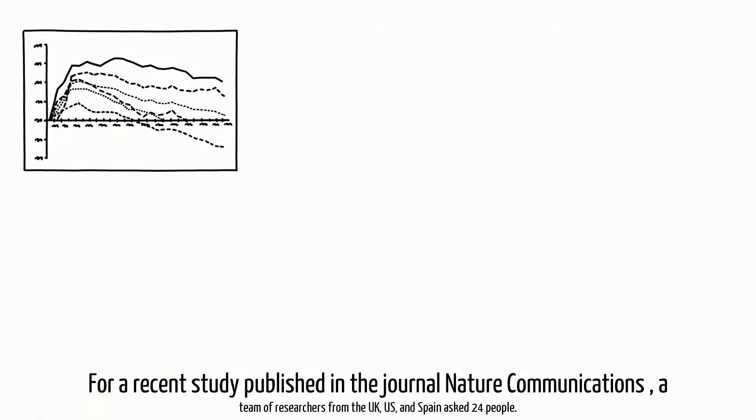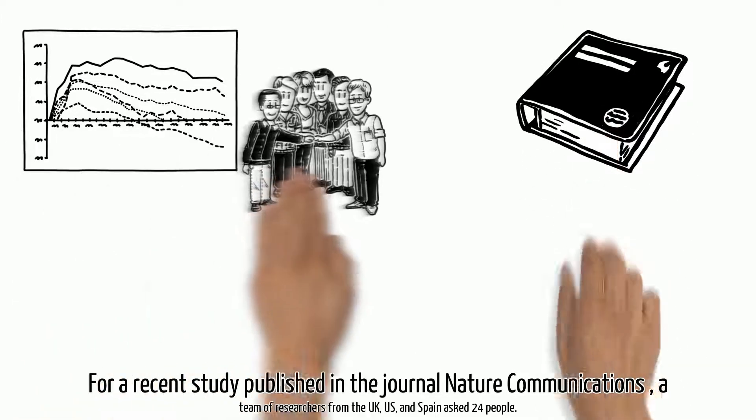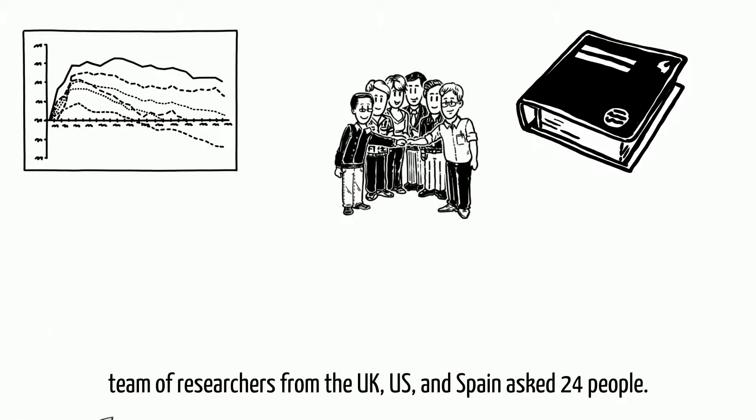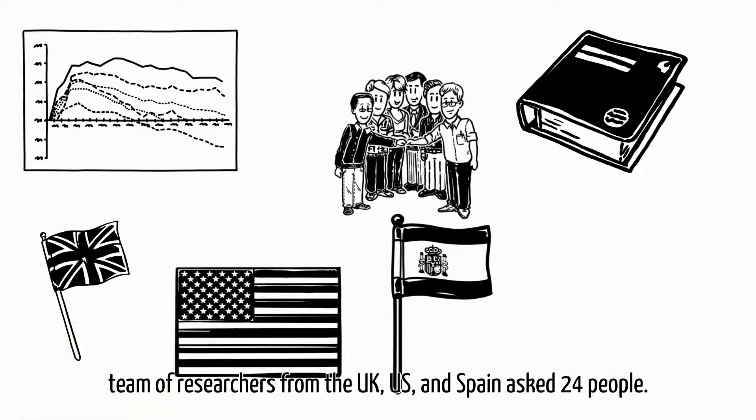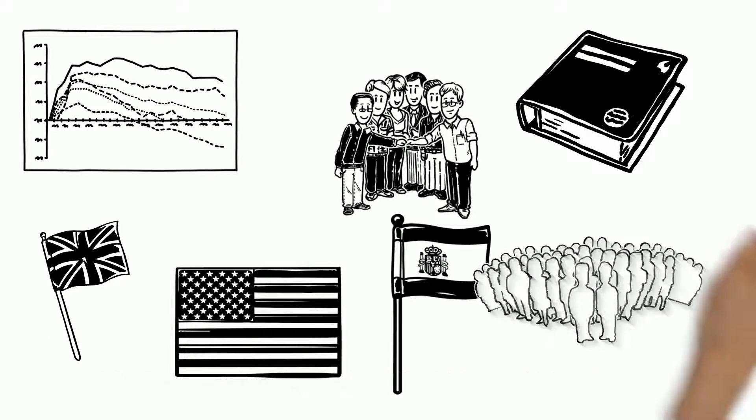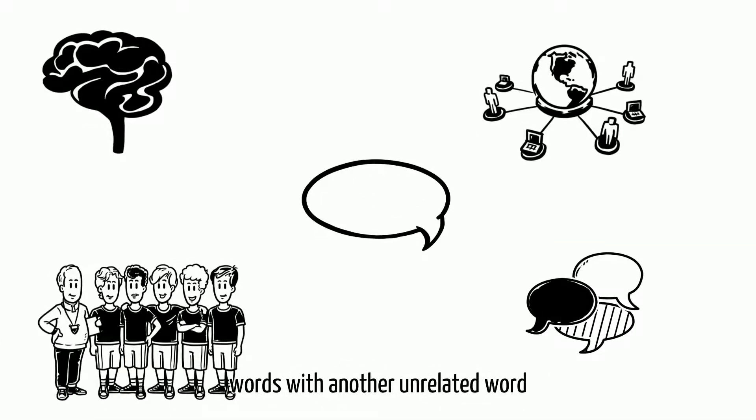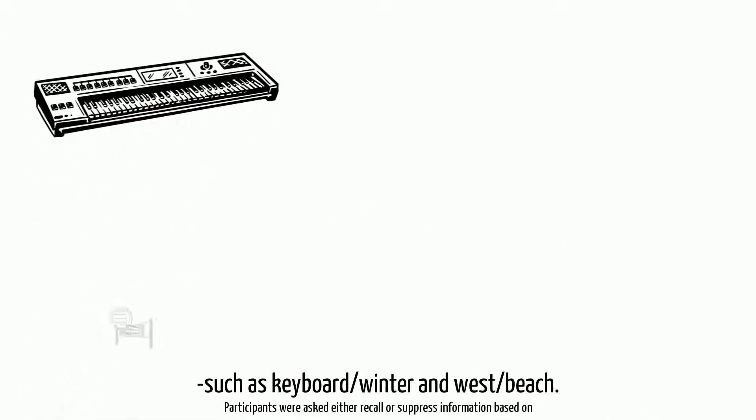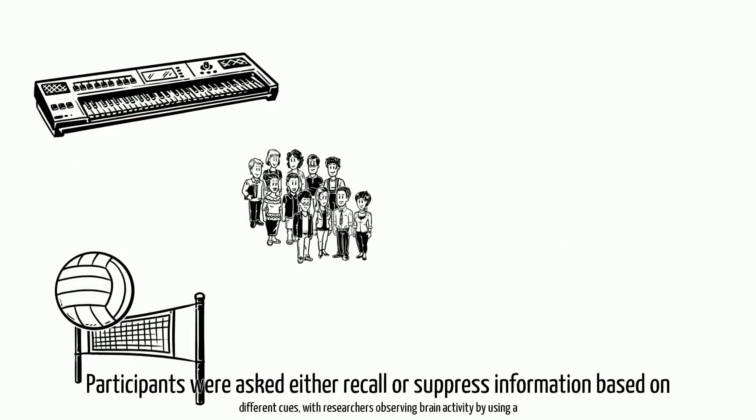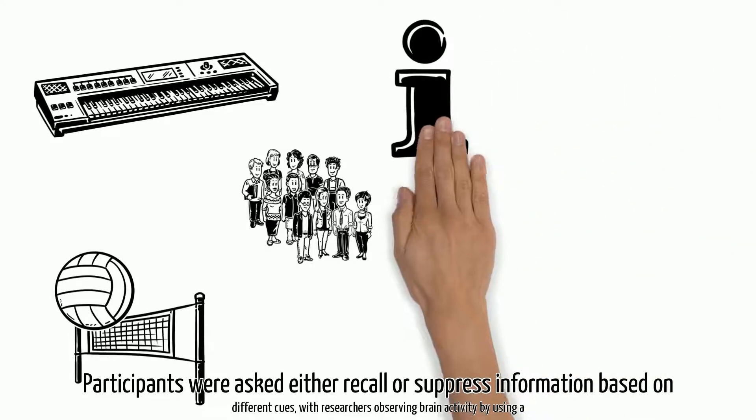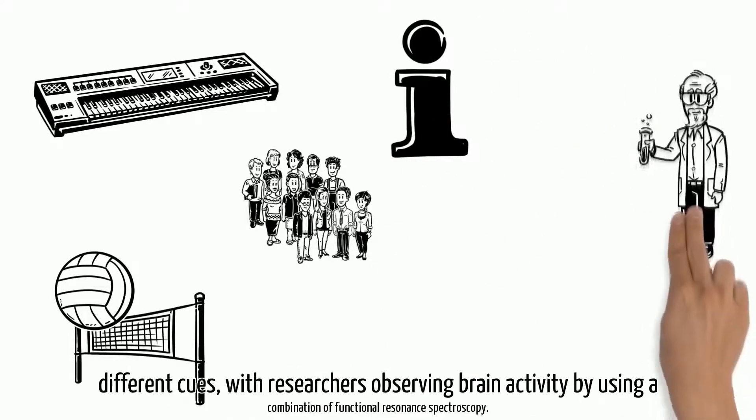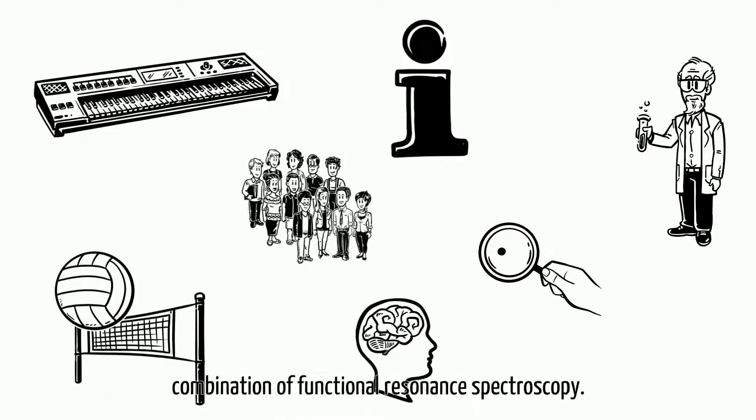For a recent study published in the journal Nature Communications, a team of researchers from the UK, US, and Spain asked 24 people to learn to link a series of words with another unrelated word, such as keyboard/winter and west/beach. Participants were asked to either recall or suppress information based on different cues, with researchers observing brain activity by using a combination of functional resonance spectroscopy.